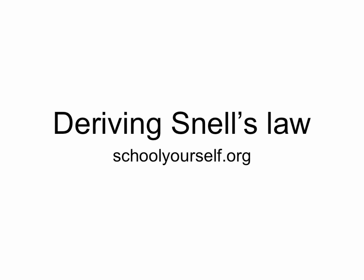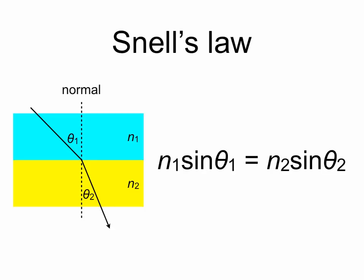Deriving Snell's Law. Snell's Law states that when light passes through materials with two different refractive indices, n1 and n2, light bends or refracts at the interface according to the equation n1 sine theta1 equals n2 sine theta2, where theta1 and theta2 are the angles between the light ray and the normal, or perpendicular line, to the interface.